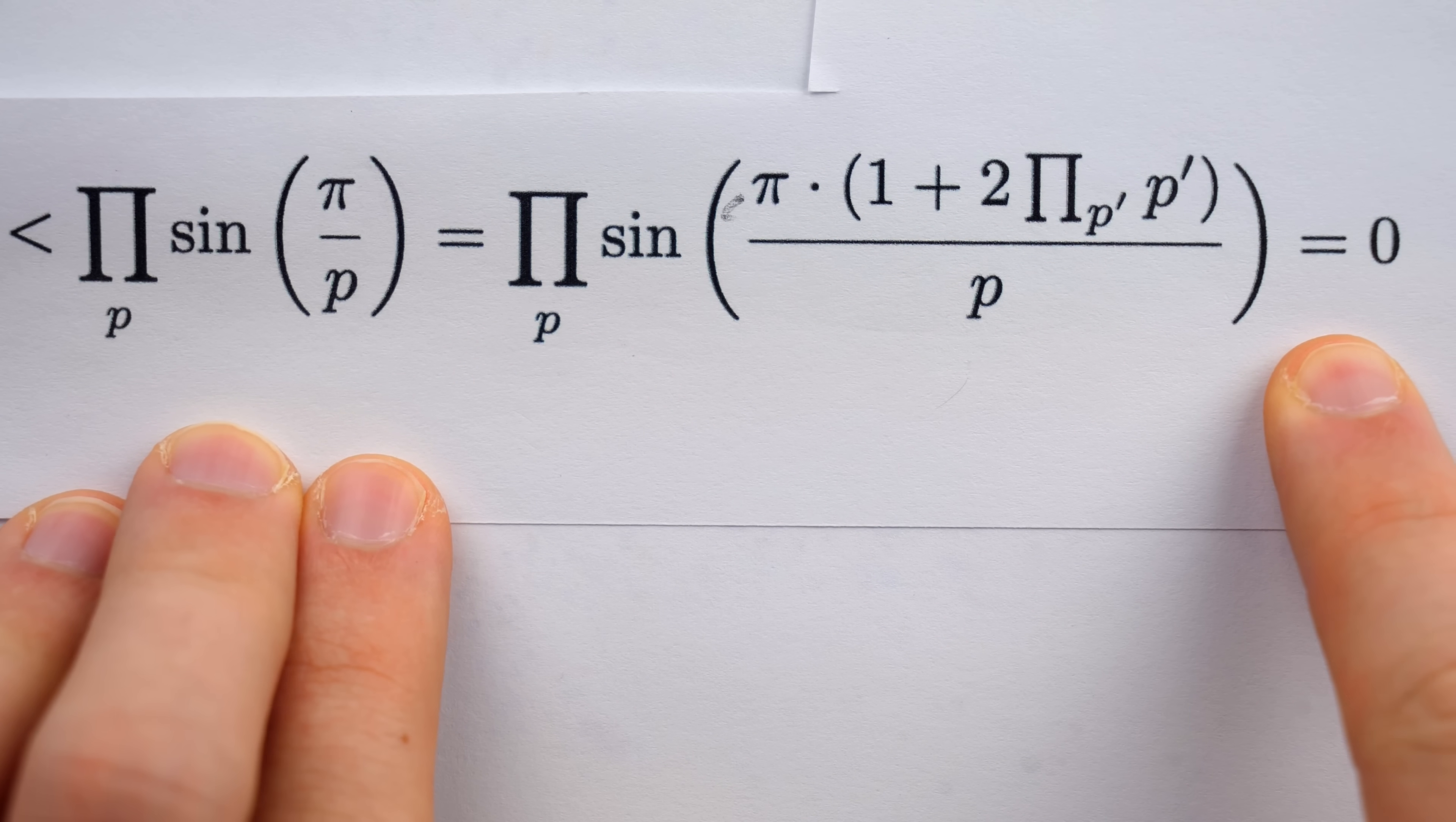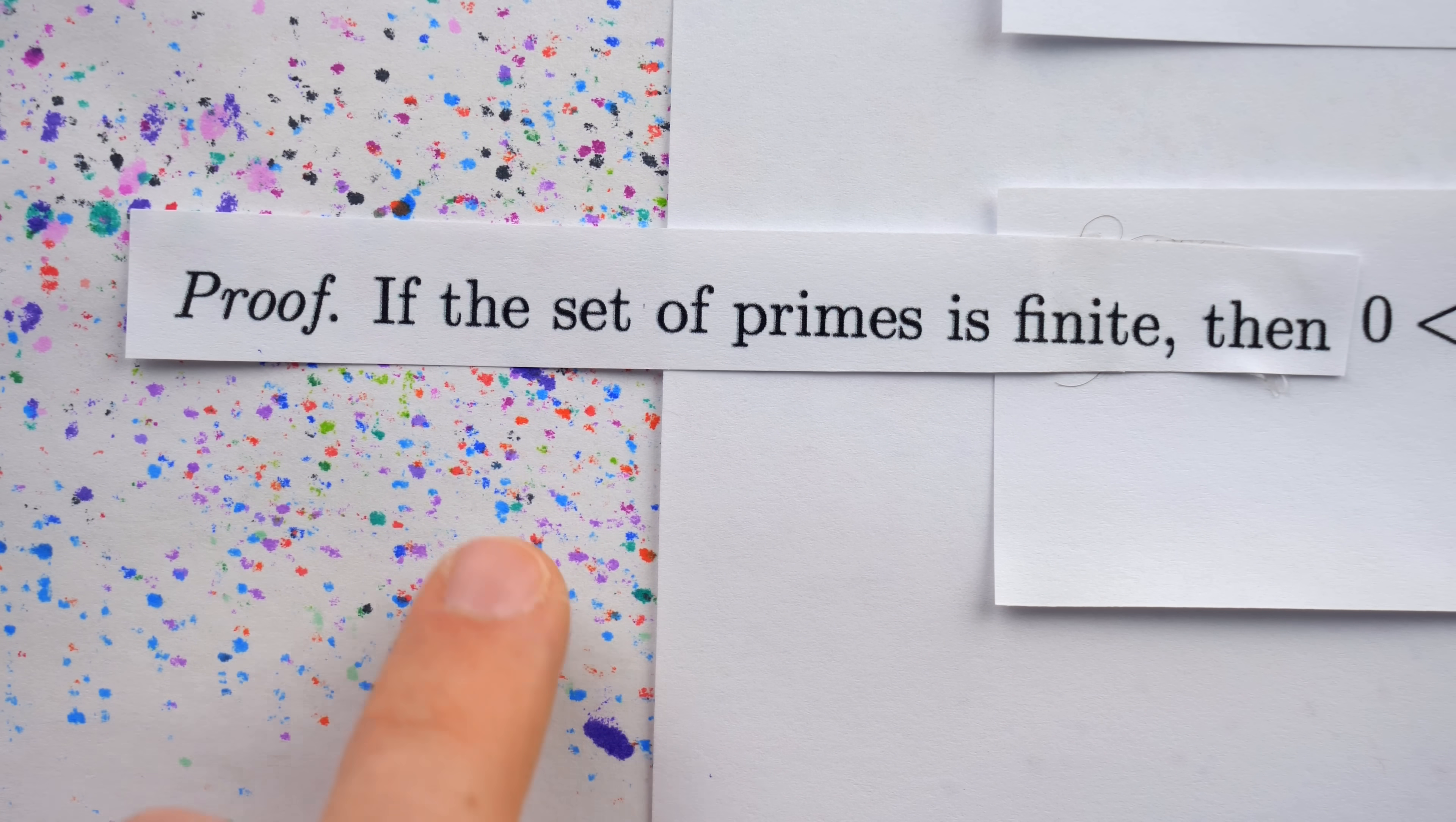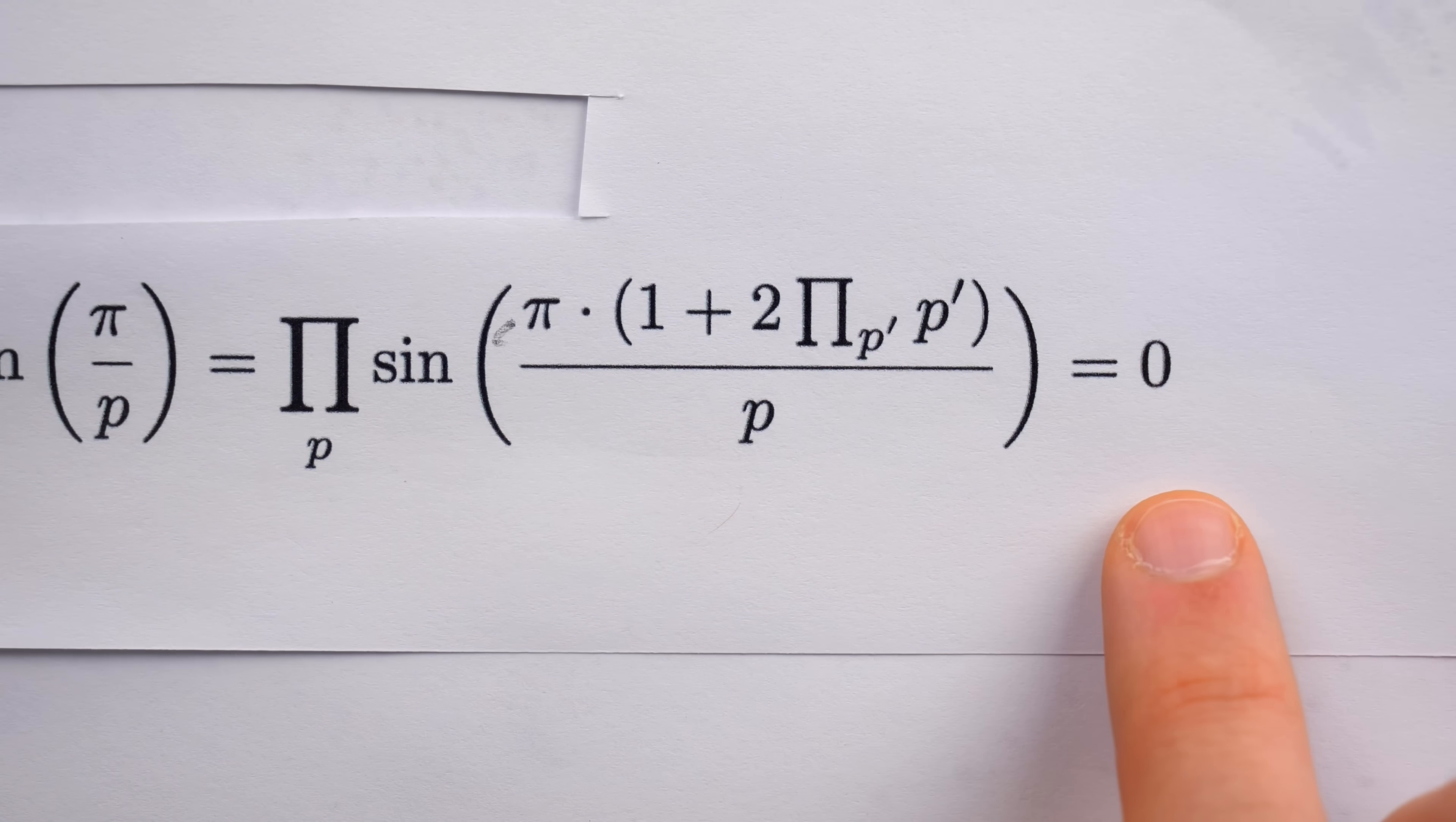And this contradiction establishes the falsehood of our assumption. We defied Euclid and said the set of primes is finite, but now we see that simply can't be so.